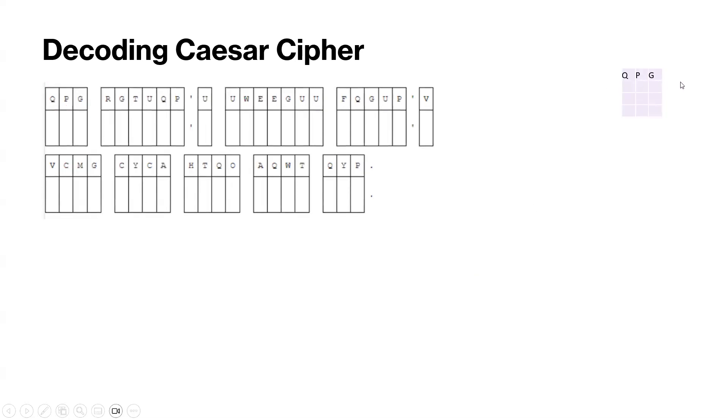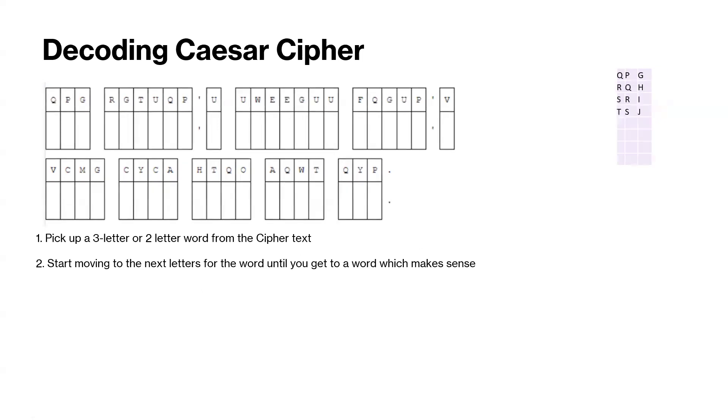Pick up a three or two-letter word from the ciphertext. Start moving to the next letters for the word until you get to a word which makes sense. So we have qpg, then let's just keep going down the alphabet for each one of these letters. We're going to keep going down and find out which words make sense.